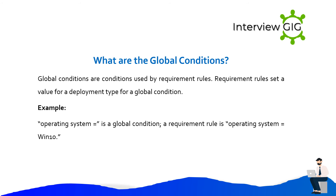What are the global conditions? Global conditions are conditions used by requirement rules. Requirement rules set a value for a deployment type for a global condition. For example, 'Operating system equals' is a global condition, and a requirement rule would be 'Operating system equals Windows 10.'